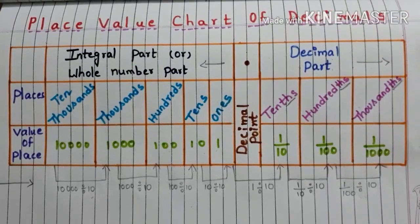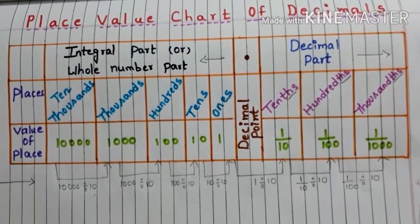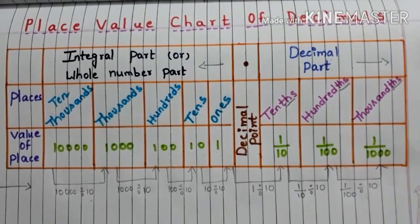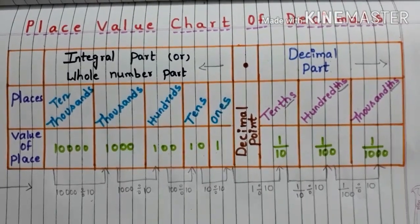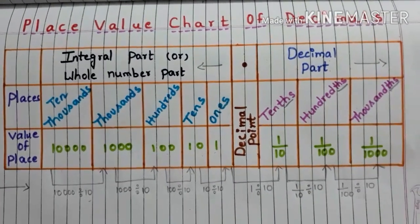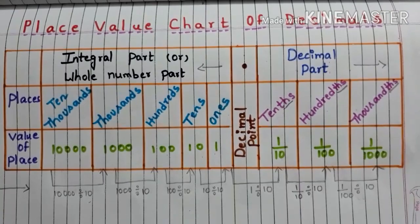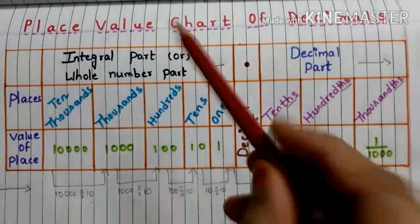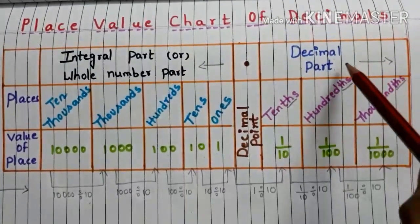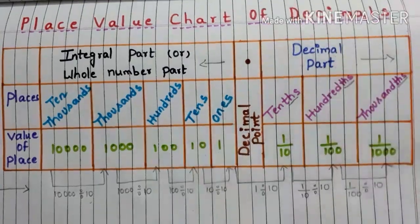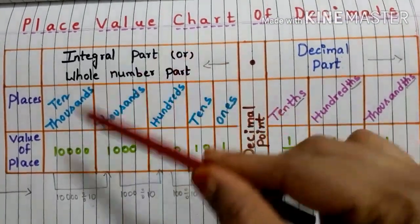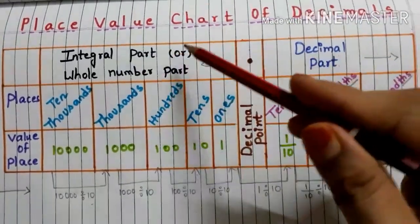Hi all, welcome back to my channel. In this video, we will have a look at the place value chart of decimals. Let's get started. We already know that the decimal number has two parts: one is the whole number part and the other one is the decimal part. First, let us see the places and place values of the whole number part.